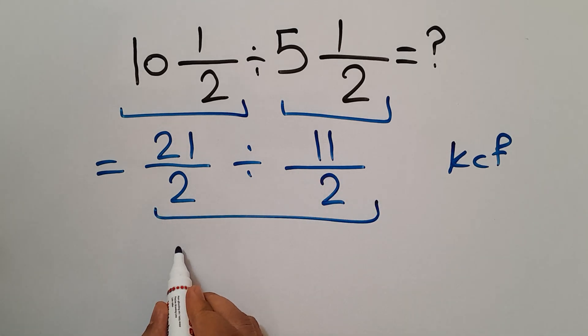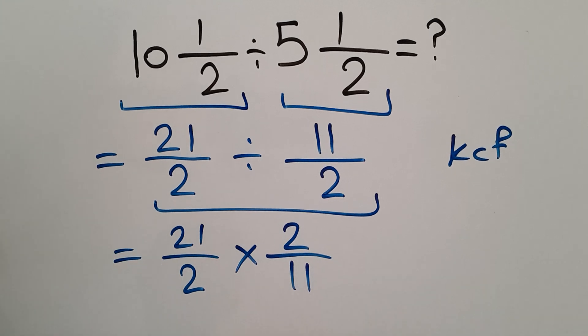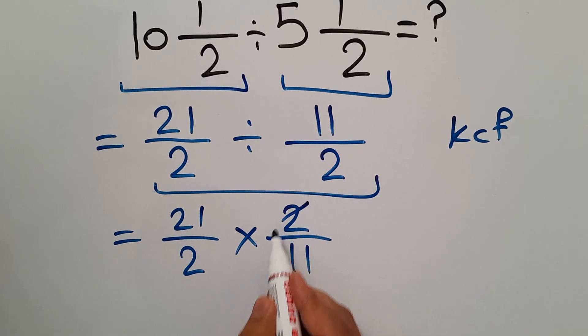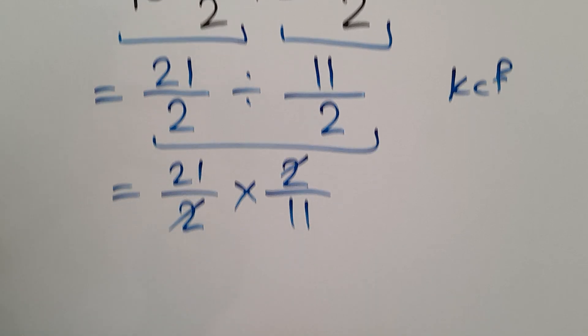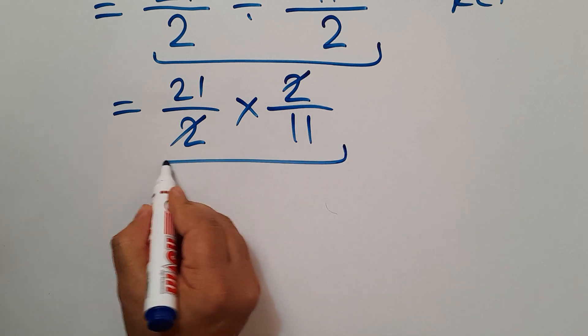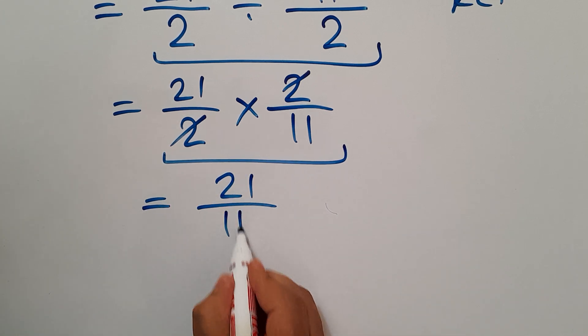We can write 21 over 2 times 2 over 11. Okay, and now these two and these two can cancel each other out, so we have 21 over 11.